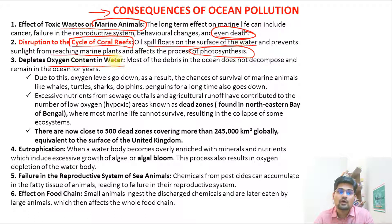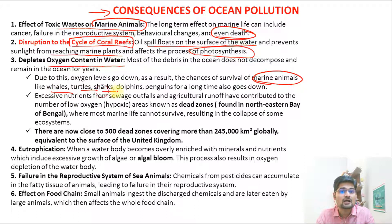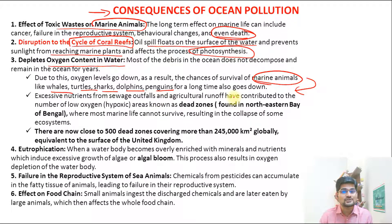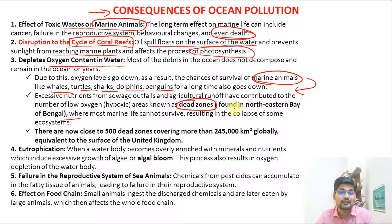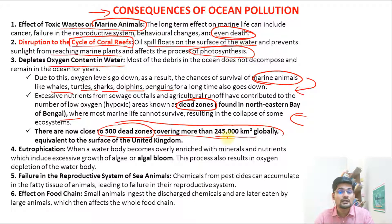Ocean pollution reduces the oxygen content in water, reducing the chances of survival for marine animals — whales, turtles, sharks, dolphins, and penguins all face population decline. Excessive nutrients from sewage outfalls and agricultural runoff contribute to hypoxic — low oxygen — conditions. These areas are called dead zones, with examples found in the northeastern Bay of Bengal. There are now 500 dead zones covering more than 245,000 km² globally, supporting no flora or fauna whatsoever.